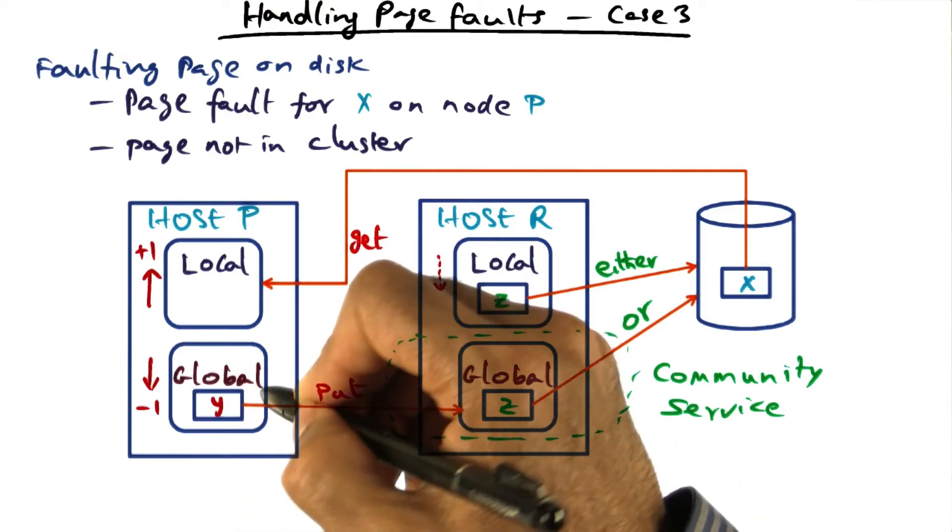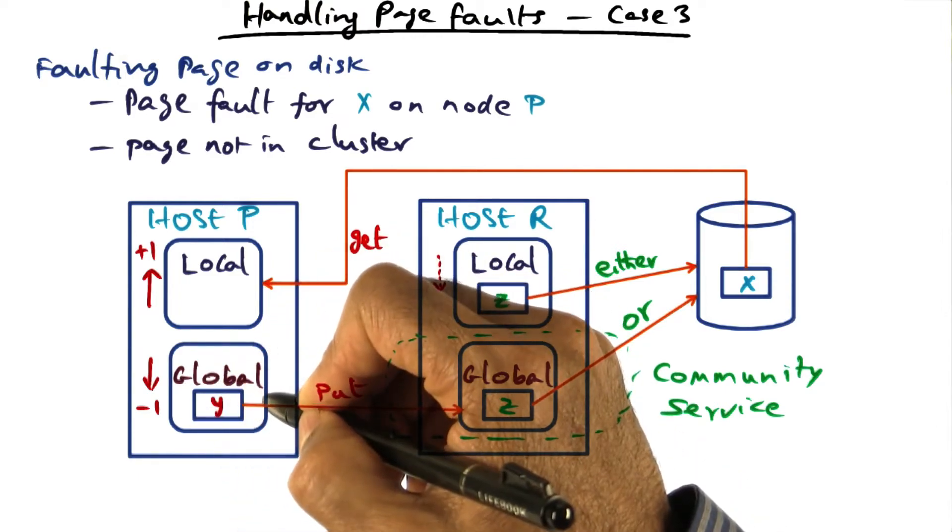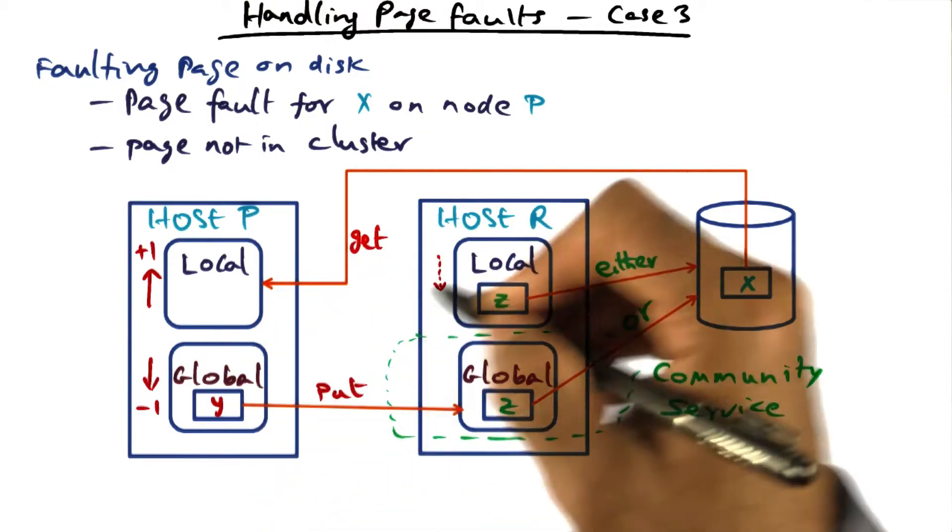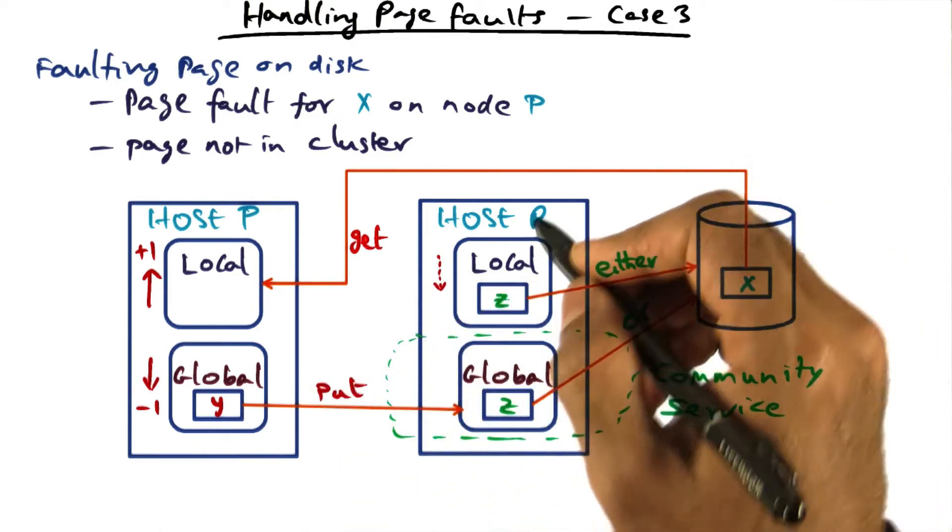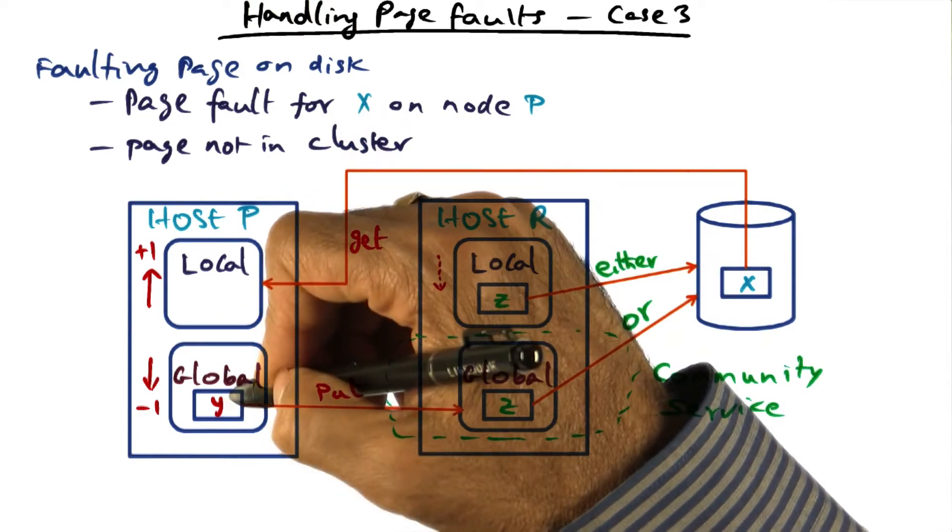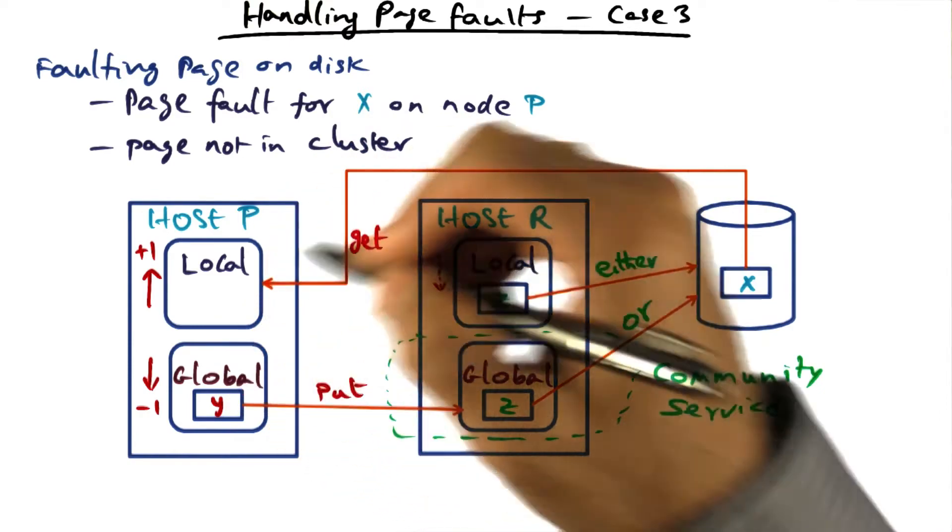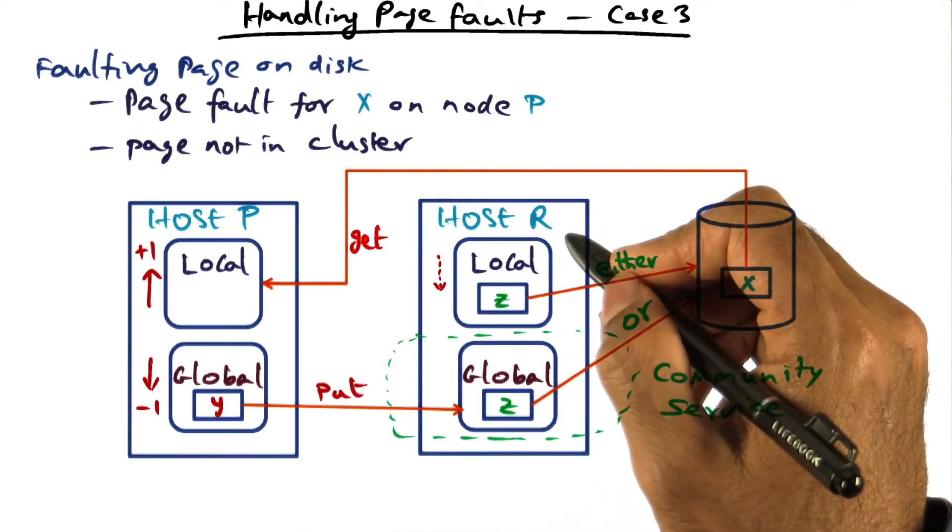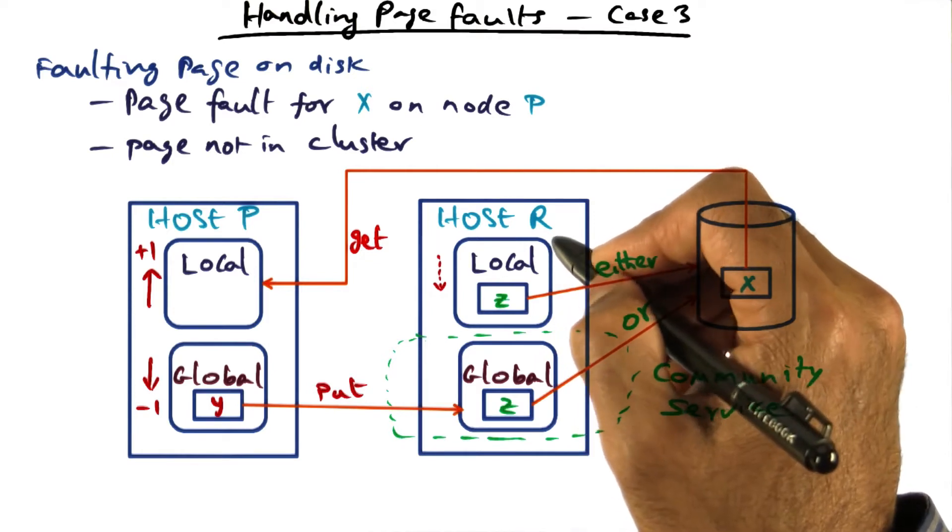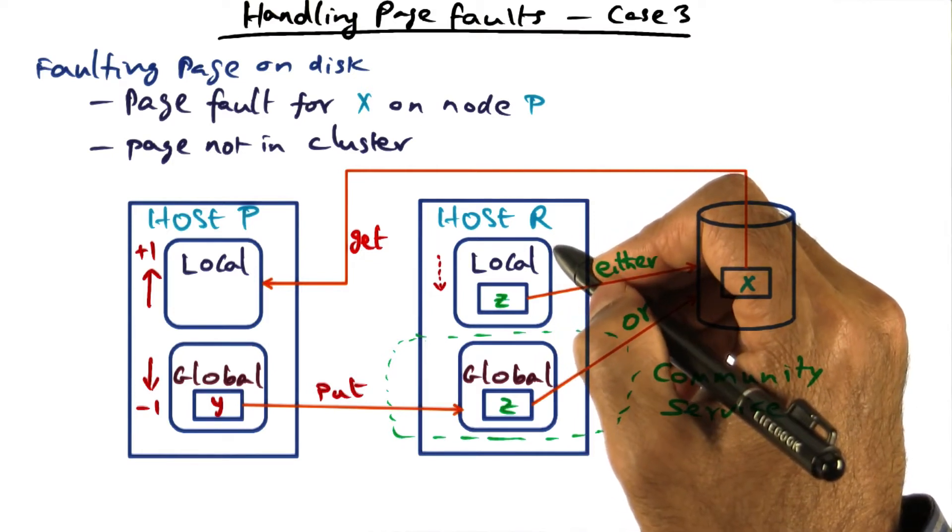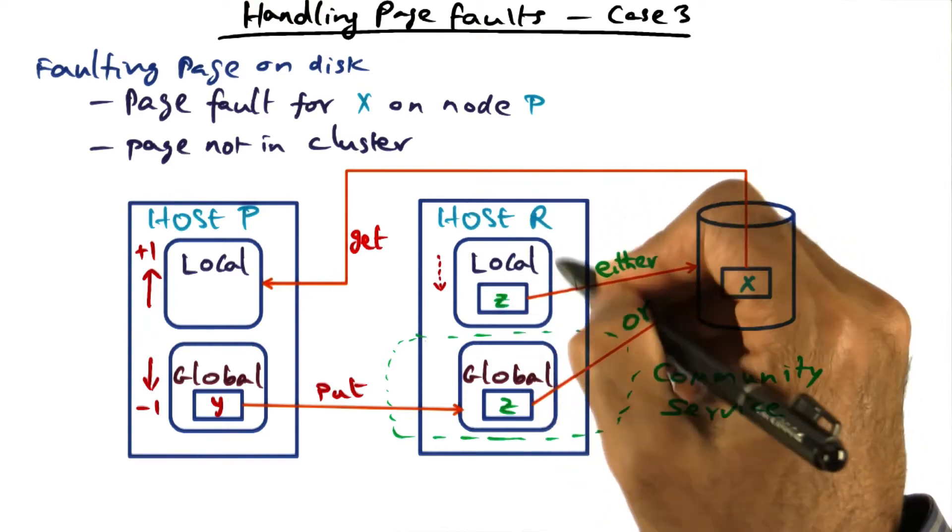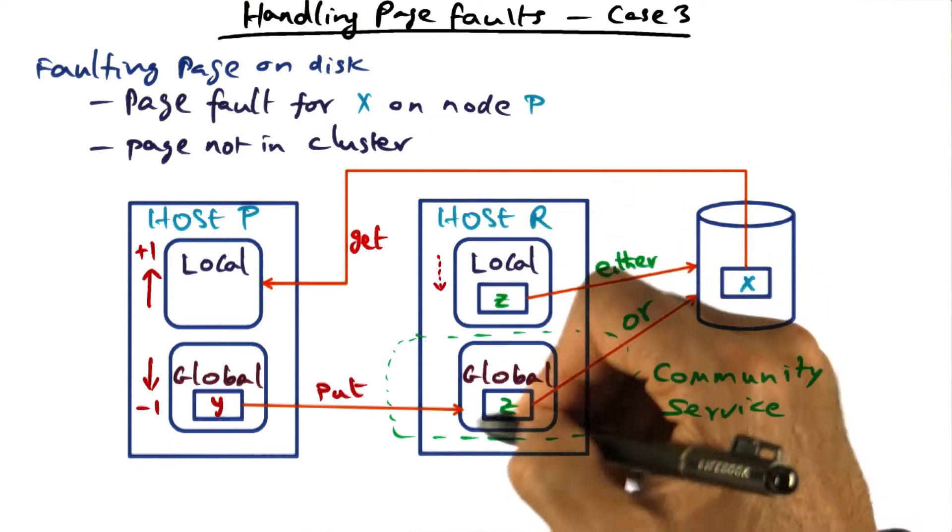By the way, I can pick any page from the global part, in both the first case as well as in this case. We can pick any page from the global part and send it out to a peer memory. And that's what we're doing here. So we are saying, here is a page that I have to get rid of. Who do I send it to? Well, I'm going to send it to the guy that happens to have the globally oldest page in the entire cluster. So let's say there is some host R that has the globally oldest page in the entire cluster. And that globally oldest page in the host R could be on the local part or the global part of this host.